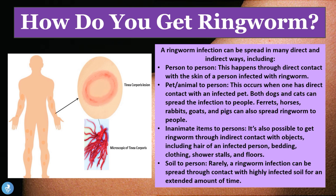The disease can also be spread from an inanimate item to a person. It's possible to get ringworm through indirect contact with objects including the hair of an infected person, bedding, clothing, and shower stalls or floors. For example, if we borrow a sweater from someone who has the rash on their arms and put it on without it being thoroughly washed, we can contract the disease in this way.